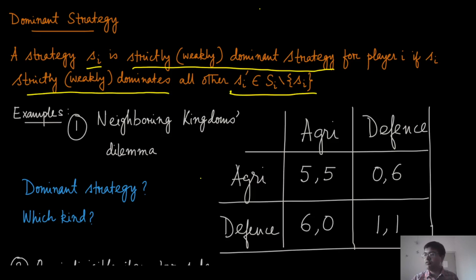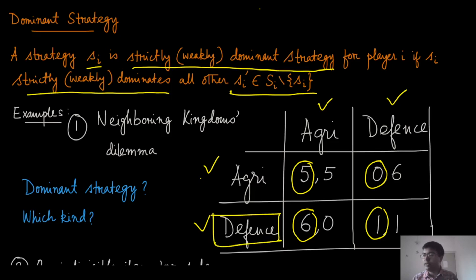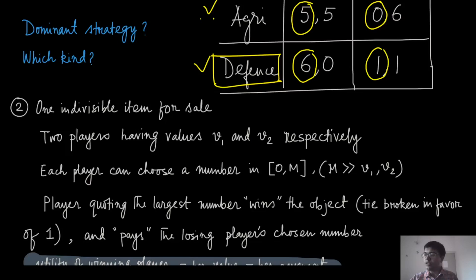Our standard example is the neighboring kingdoms dilemma discussed earlier. Agriculture and defense are the two strategies for these two players. If Player 1 chooses agriculture, it gets less utility than choosing defense, and similarly when the other player also chooses defense, Player 1 still gets a strictly better utility by choosing defense. Therefore, defense is a dominant strategy for Player 1, and because the game is symmetric, defense is also the dominant strategy for Player 2.